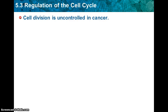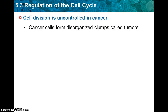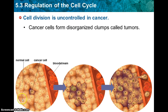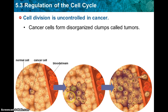Cell division is uncontrolled in cancer. Cancer cells form disorganized clumps called tumors. Here is a diagram — we have normal cells all around, a cancer cell starts to divide, and you can see cytokinesis and telophase occurring. The tumor just keeps getting bigger and bigger until cancer cells start passing through the bloodstream.